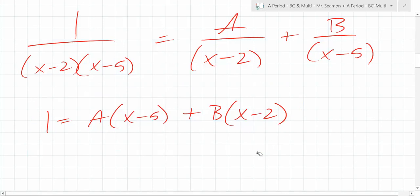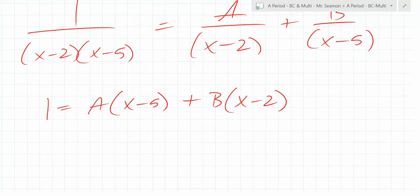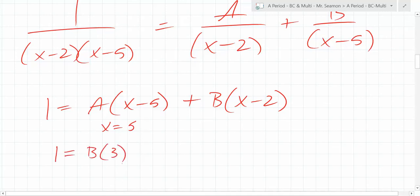We want this to be true for all x values. We're trying to find A and B values that work for all x values. So if they work for all x values, it has to work for any x value we choose. Are there any particular x values we can choose that are helpful in terms of reducing the system? Zero. Oh no. Zero is a good, we're aiming for zero, but we want something to cancel. X is equal to, let's say, five. If we do that, we get one is equal to B times three. So what does B equal? A third.